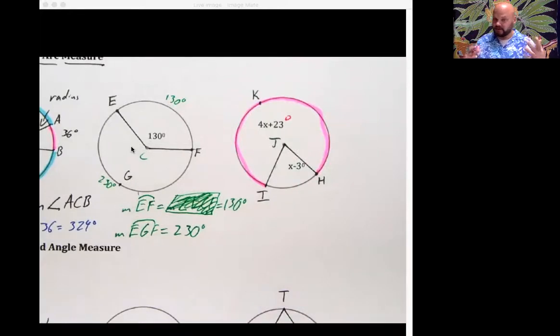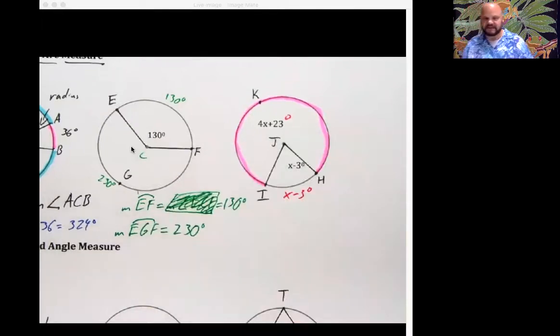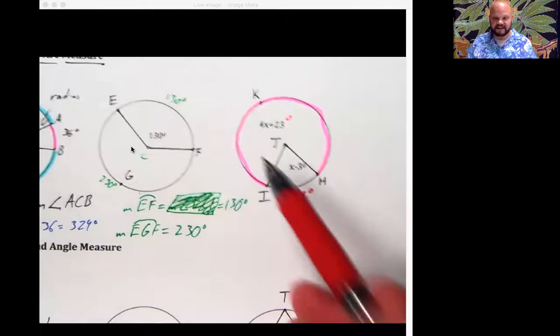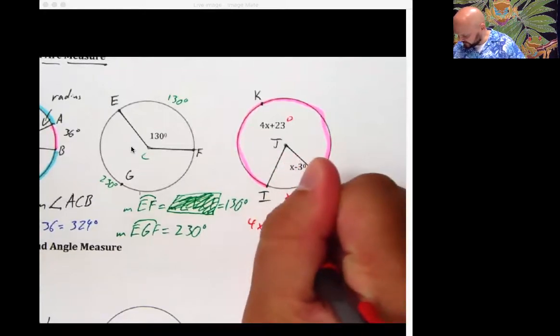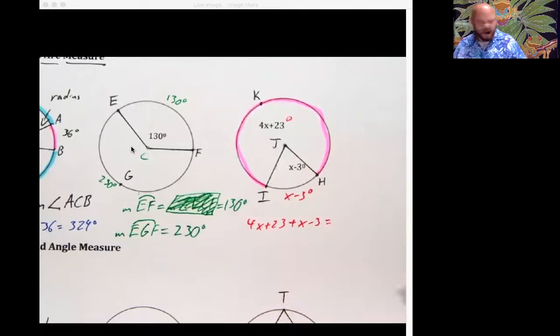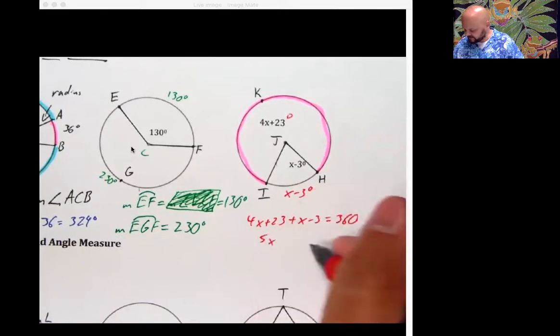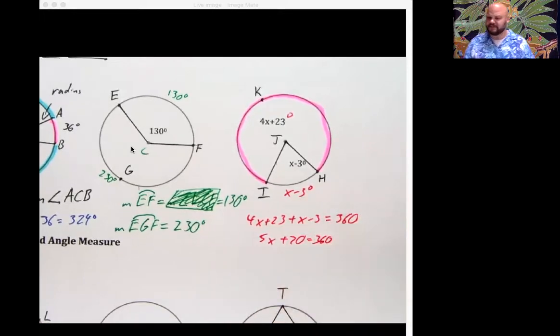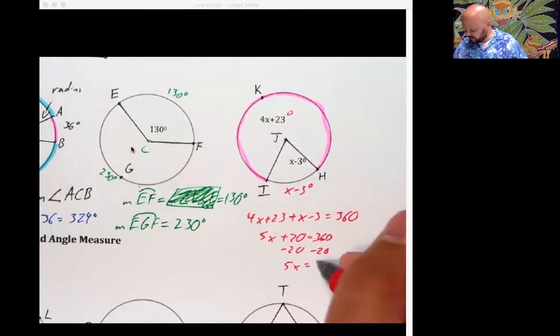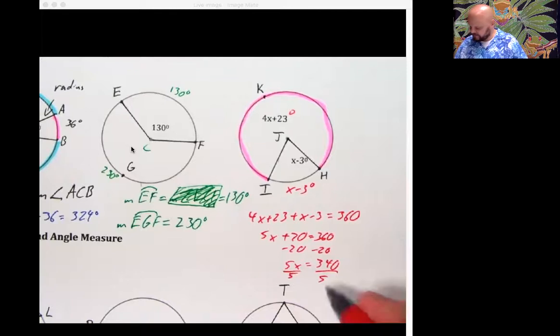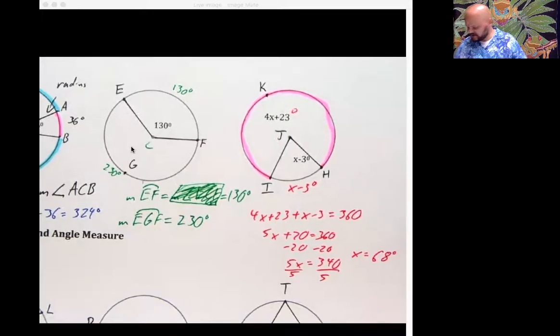So how are we going to figure out what X is? Well, if this angle was X minus three, this arc is also X minus three. Yes, Mr. Beal, I'm not surprised. Yeah. But these arcs together have to add together to make 360 because that's how many degrees are in a circle in total. So 4X plus 23 plus X minus 3 equals 360. We do a little math cleanup, some pretty easy stuff. We've got 5X plus 20 is equal to 360. Minus 20 minus 20. I've got 5X is equal to 340. I've got X is equal to 68. 68 degrees is X.